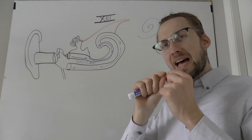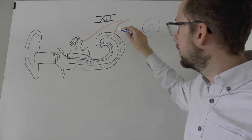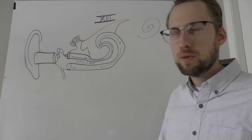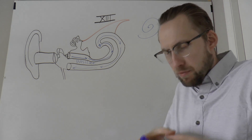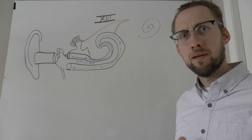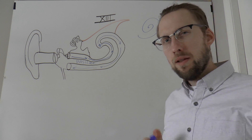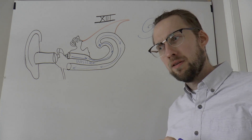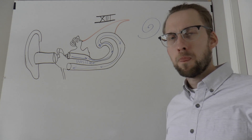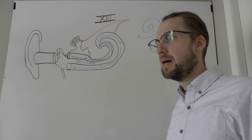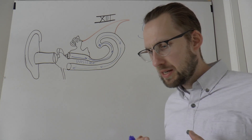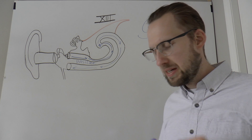All the axons of the hair cells bundle up and leave the cochlea. That bundle of axon fibers makes up half of the vestibulocochlear nerve — a cranial nerve that allows your brain to interact with your senses.